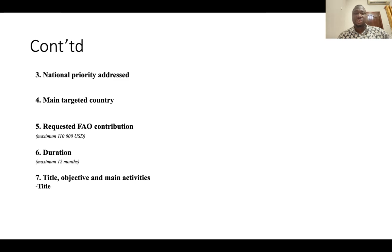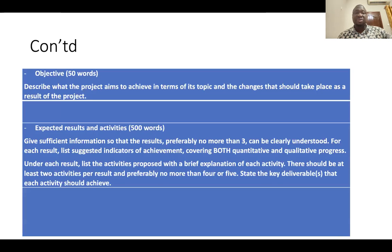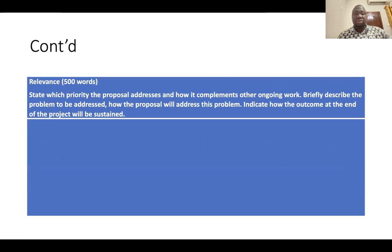If you want to take some of these chapter activities as a full-time role and you're able to win some of these grants, a lot of you could be employed by the chapters to implement some of these projects. And of course the project title, objectives, and main activities — some of these things fall in line with what myself and Sheila are trying to take you through. You should describe objectives very precisely. Expected results and activities — what is the national priority which the proposal is addressing?